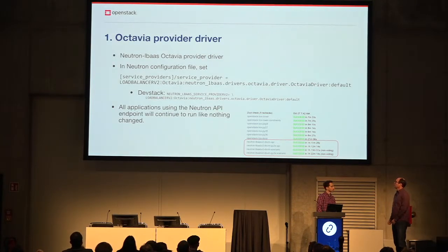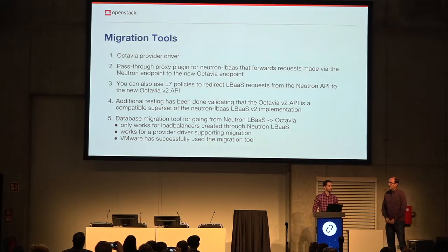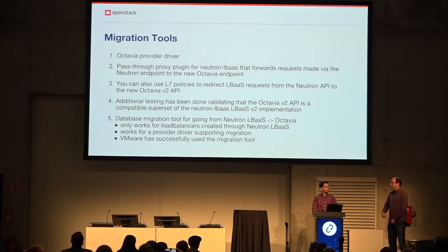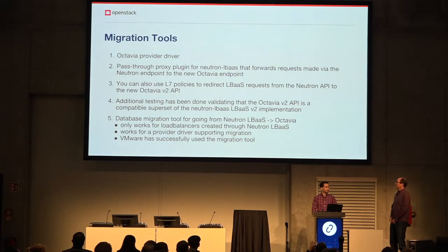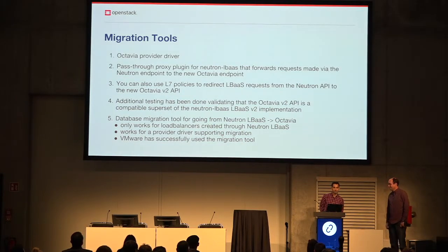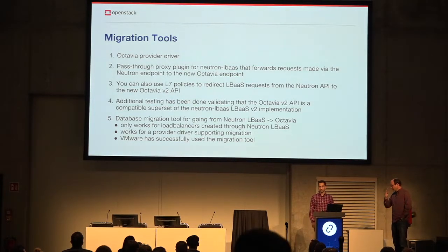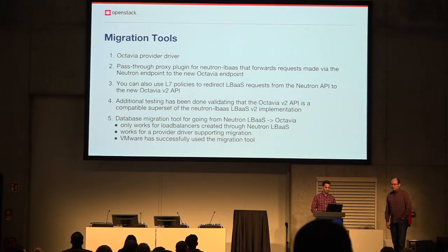There are some caveats: the migration tool only works for load balancers created in Neutron LBaaS, and it only works for providers which support the migration. If you're running a hardware appliance like an F5, Netscaler, or Radware, those vendors would have to support the migration. VMware already has a provider driver for Octavia and has successfully used the migration tool, so if you're running VMware load balancers on the backend, this tool will most likely work for you.